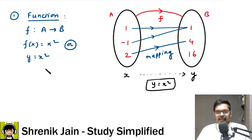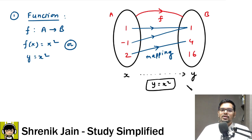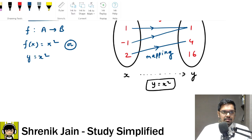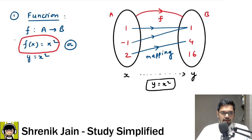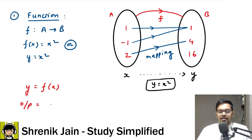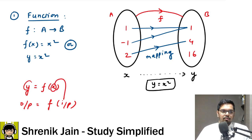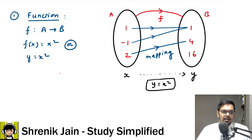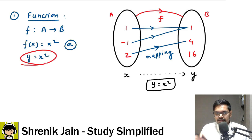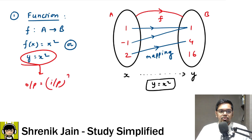The terminologies are important: input is always represented by x, output by y. The relationship is that y is a function of x — output is a function of input. So for our example, y = x², meaning output equals input squared. This is how the relation looks: output is function of input, and that function is the condition.